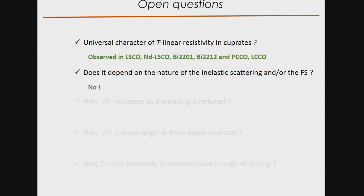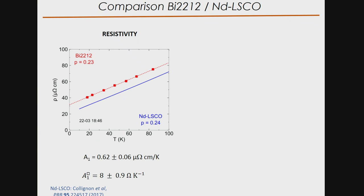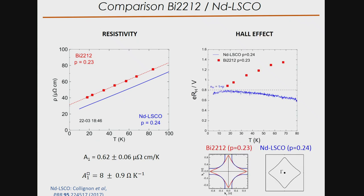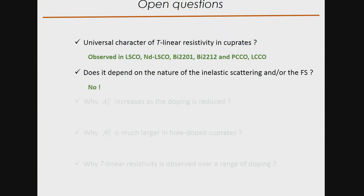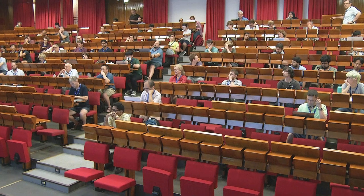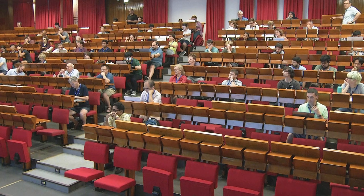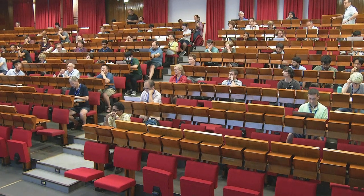An audience member notes: you say the slope is universal but it depends on doping, and how can you be sure the doping in each compound is exactly the same relative to p*? The speaker responds: it seems the slope does not actually depend on the location relative to p* in a way that invalidates the comparison — let me elaborate a little bit more and I hope you will understand.